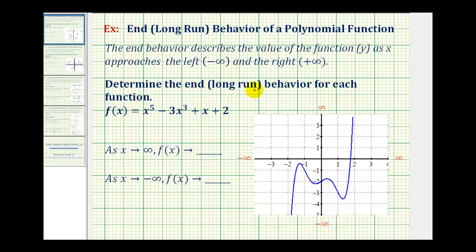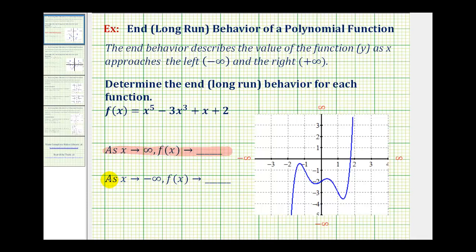We're asked to determine the end behavior, or long run behavior, for each function. The end behavior describes the value of the function, or the y value, as x approaches the left or negative infinity, and approaches the right or positive infinity. The notation we use for end or long run behavior: as x approaches positive infinity, f of x approaches some value, and as x approaches negative infinity, f of x approaches some value.